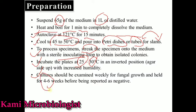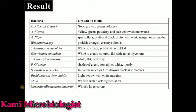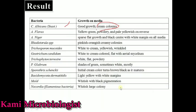On this media, Candida albicans grows as a yeast-like organism with creamy white colonies. As you can see on screen, these are the Candida albicans creamy white colonies. Aspergillus shows yellow-green powdery and pale yellowish growth — as you can see, these are the greenish colonies of Aspergillus flavus.